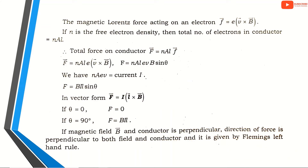The magnetic force acting on an electron is F equal to e into V cross B. This is the magnetic Lorentz force equation, where e is the charge of the electron.